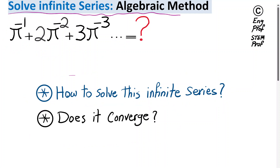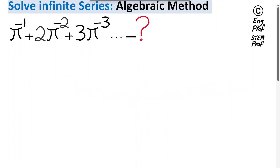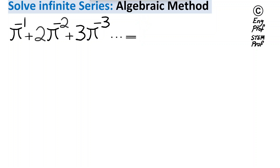I would like to answer these questions using an algebraic method as a quick way to solve this problem. Let's focus on the terms involved in this series. The first term is 1 times π to the power minus 1, and the second is 2 times π to the power minus 2. Let's refer to this series as S, and multiply the numerator and denominator of S by 1 minus π to the power negative 1.